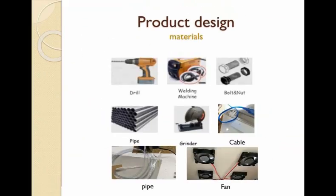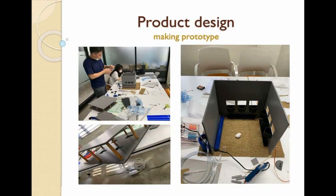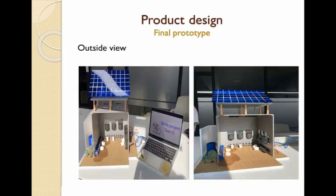To produce the prototype, we purchased several materials like fans, a grinder, a welding machine, a solar panel, and more. Then we started 3D printing, assembling, and testing the prototype until it worked successfully. This is the result of our work.